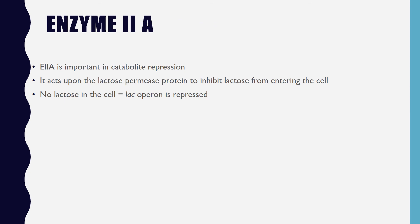Catabolite repression of the lac operon is under the control of enzyme 2A. This protein is activated by glucose, which is the preferred carbon source for bacteria. When glucose is available, enzyme 2A inhibits lactose permease, which reduces the amount of lactose that can enter the cell. With no lactose in the cell, the repressor protein can remain bound to the operator and the operon will be off. The bacterium is forced to use glucose as a carbon source, which is more efficient because it does not have to break a disaccharide to obtain the sugar. Therefore, enzyme 2A is responsible for the catabolite repression of the lac operon.